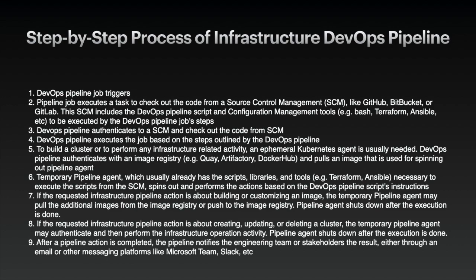Three, the DevOps pipeline authenticates to the SCM and checks out the code from the SCM repo. Number four, the DevOps pipeline executes jobs based on the steps outlined by the pipeline script. Step five, to build a cluster or to perform any infrastructure-related activities, an ephemeral pipeline agent is usually needed. The DevOps pipeline authenticates with an image registry — for example, Quay, Artifactory, or Docker Hub — and pulls an image used for spinning up the pipeline agent.